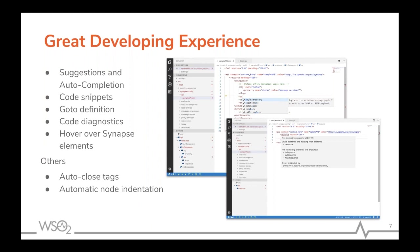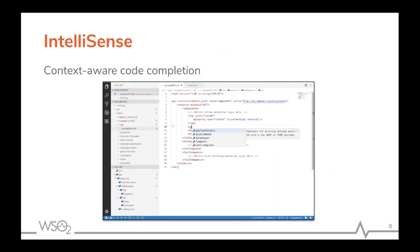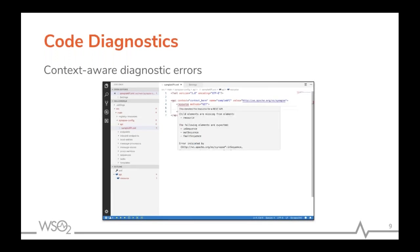The first feature is IntelliSense, also called context-aware code completions. This is very important because when you are developing Synapse configurations, the extension will help you with all the suggestions and autocompletions. The code diagnostic feature is also very important — it warns you about erroneous code in your configuration, the reason for the error, and what you can do to correct it.